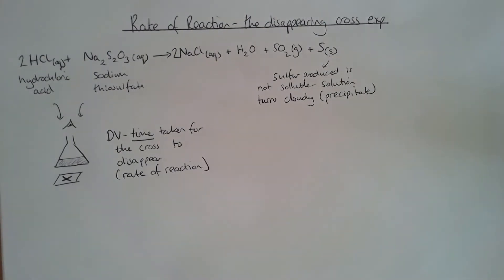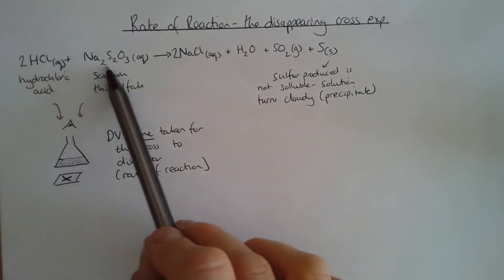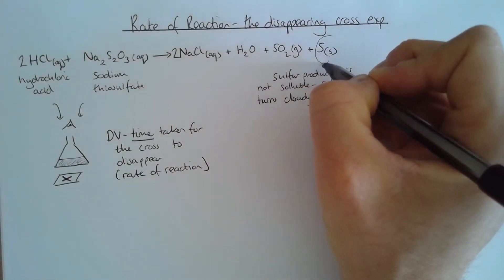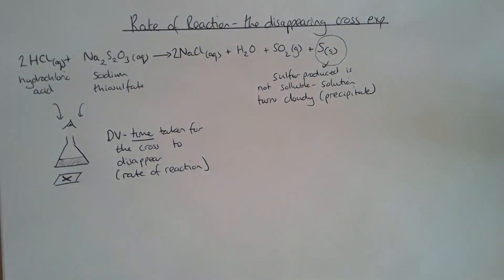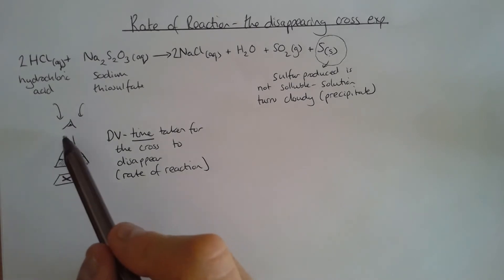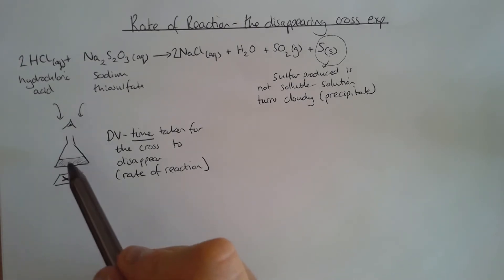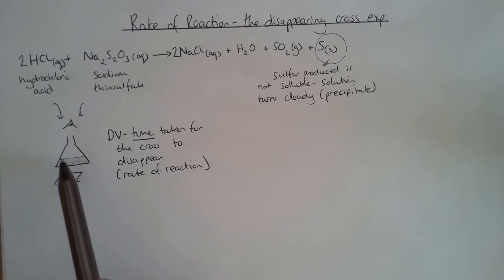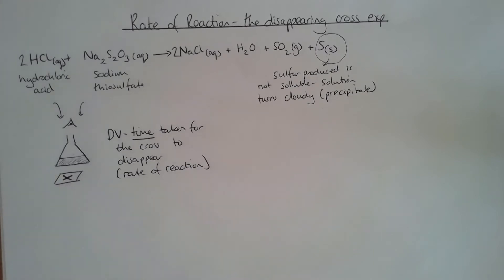That's an introduction to the reaction. We don't need to memorise the full equation — the most important thing is that it produces sulfur, which is a solid that doesn't dissolve in water. So the solution turns cloudy, and we measure how long it takes by placing the conical flask on a tile or paper with a black cross.